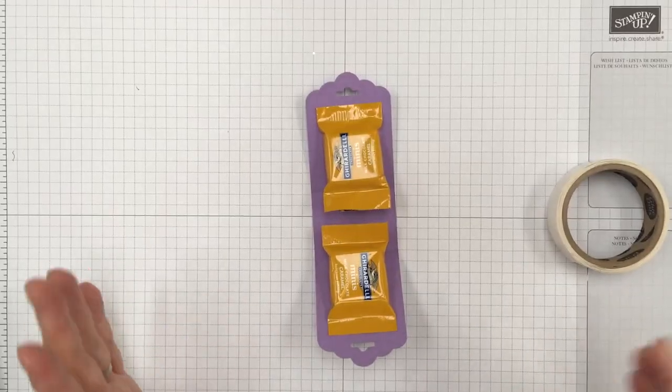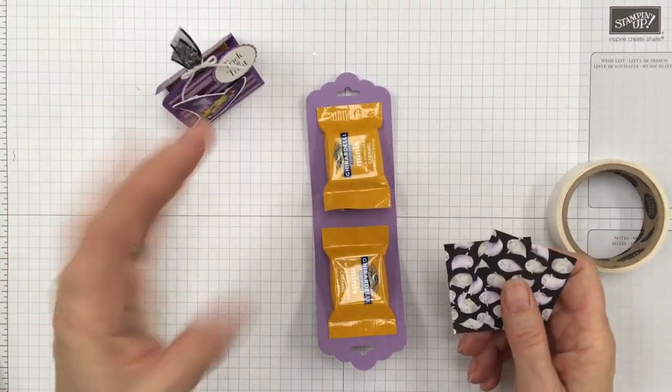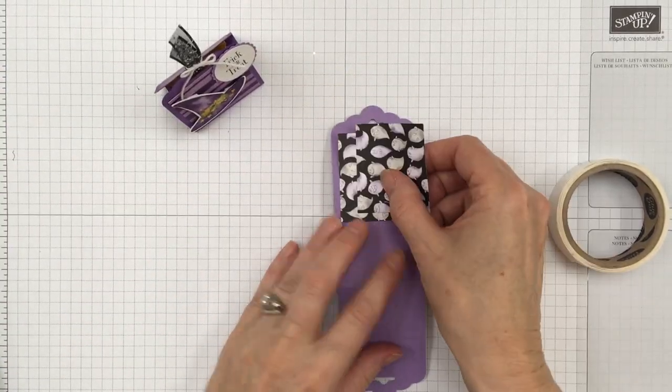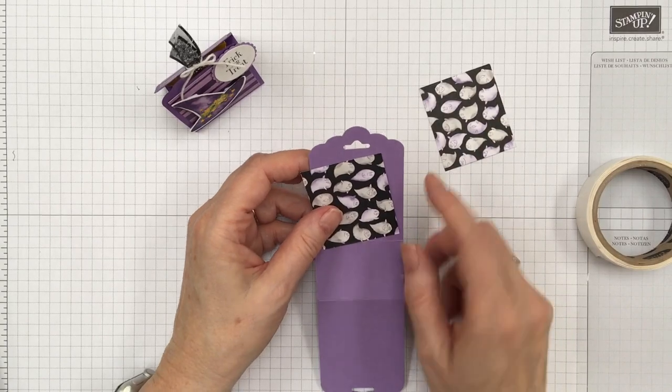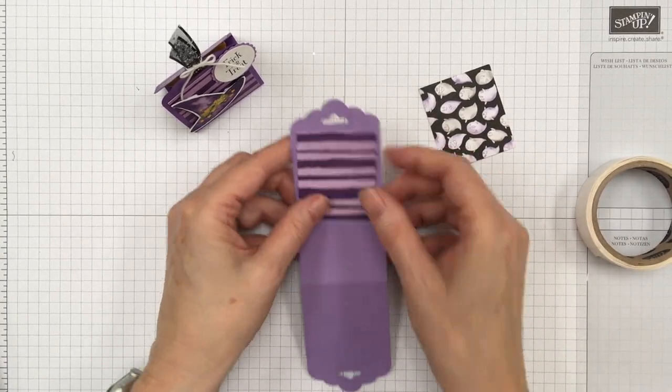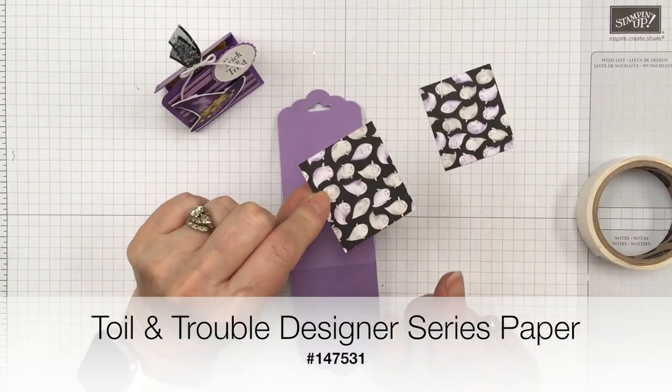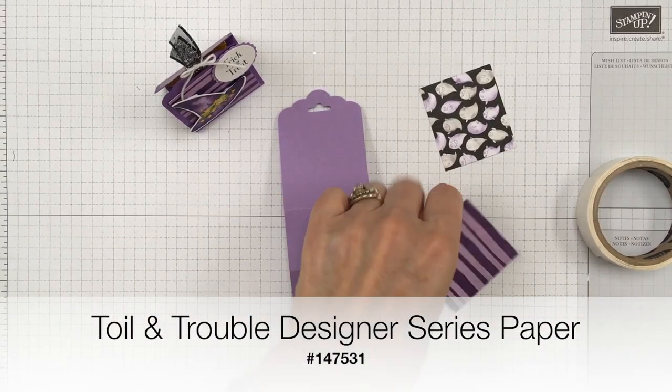Oops, now you know what I should have done? I should have gone ahead and put my paper on first. What was I thinking? Oh well. So before you put your candy in, you want to put your paper. So actually I said I would use that side. It's a really hard call which paper and I didn't say this is toil and trouble designer series paper.